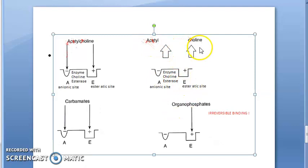Now what happens with carbamates? They bind again to both the sides and acetylcholine can't bind here, so these are anticholinesterases. Organophosphates are also anticholinesterases, however they bind only to one side. The other side will be free.